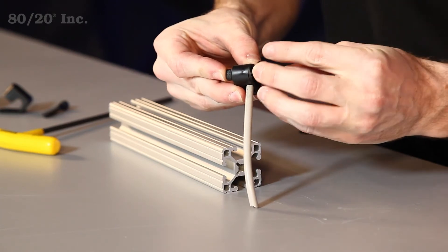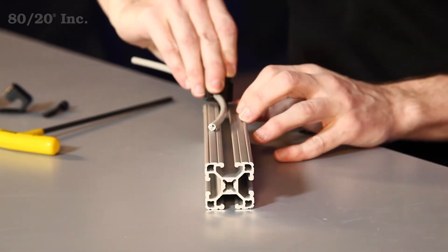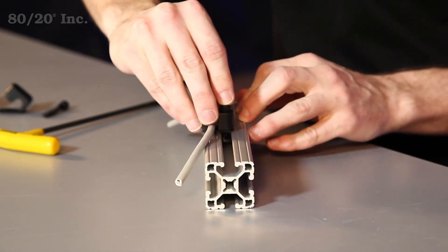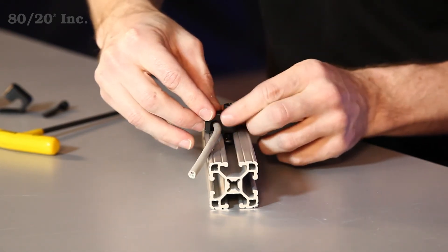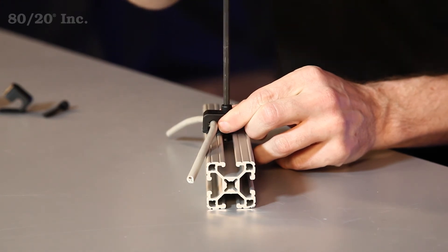Once you get that preloaded on the end, we'll slide it into the open T-slot, we'll get it into position, and we'll take our T-wrench and tighten it down.